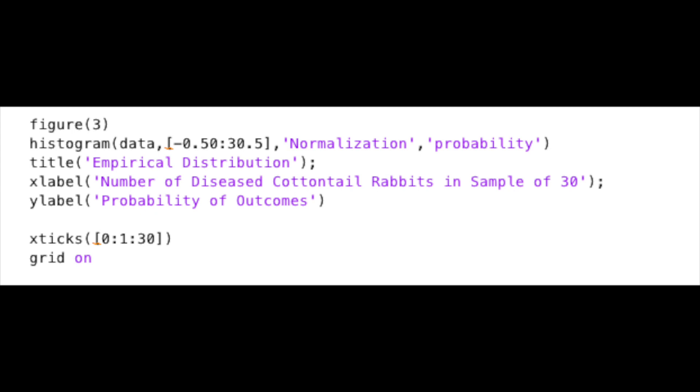Everything else in this example is essentially the same. However, I have changed the Y label to represent the fact that we are now displaying the probability of each outcome within the bin instead of the frequency.